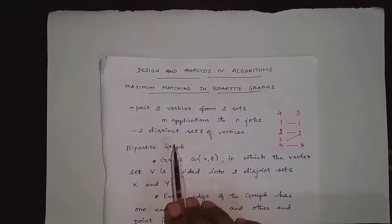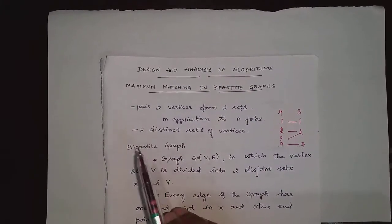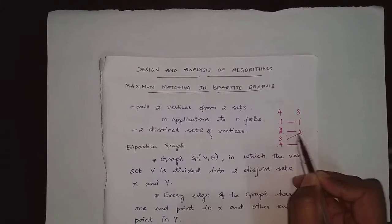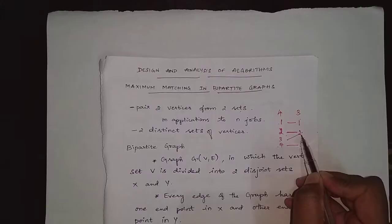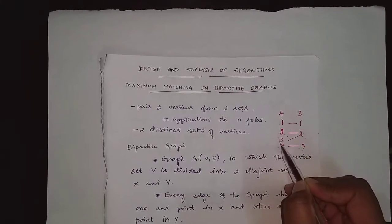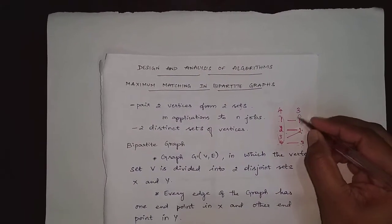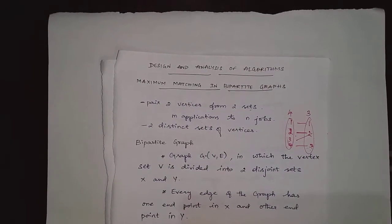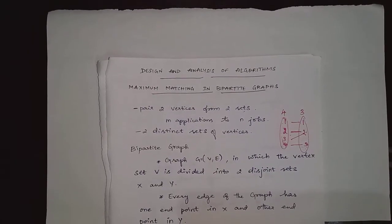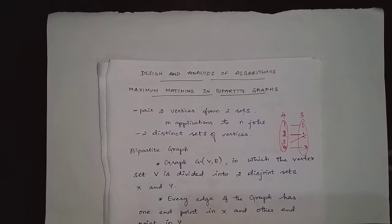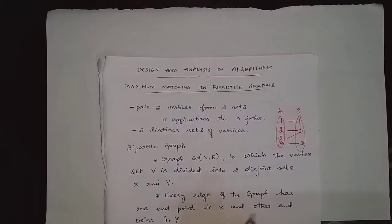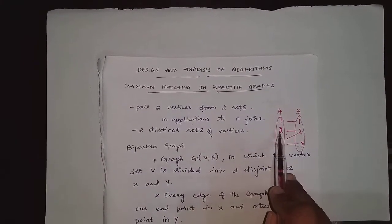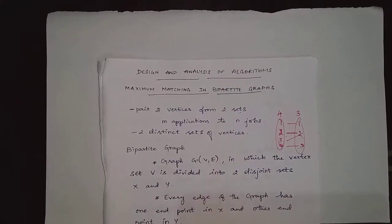These applications are assigned to jobs, so this actually looks like a bipartite graph, and this is called matching — pairing between two sets of vertices. One vertex is from applications, one vertex is from jobs, and we make a pair out of it. An edge contains two vertices: one from a particular set and the other from another set. This is just an introduction for matching — matching between two sets of vertices.